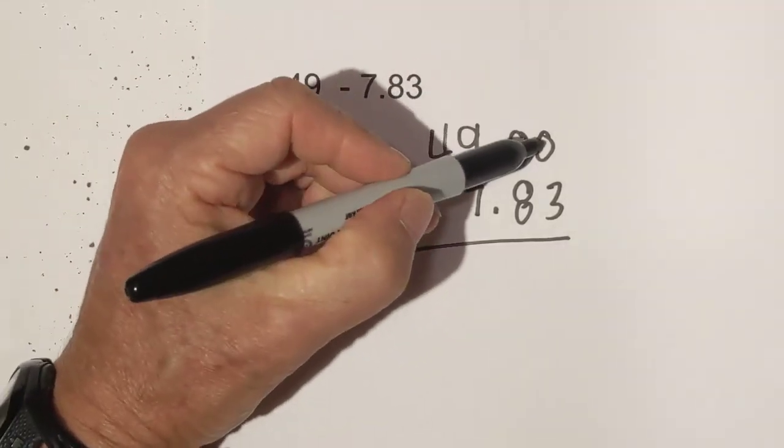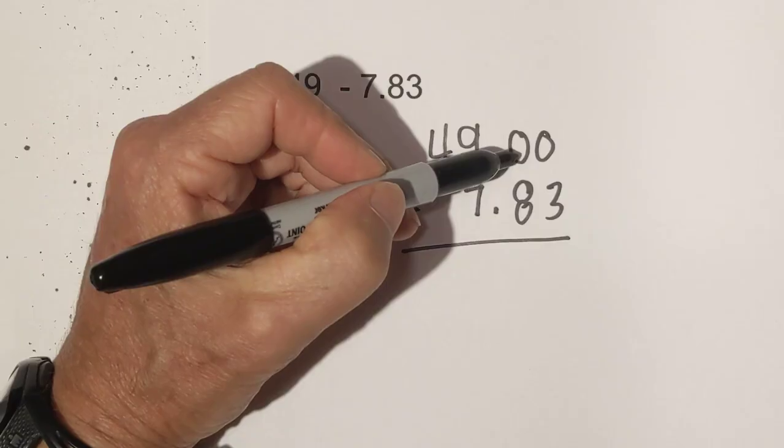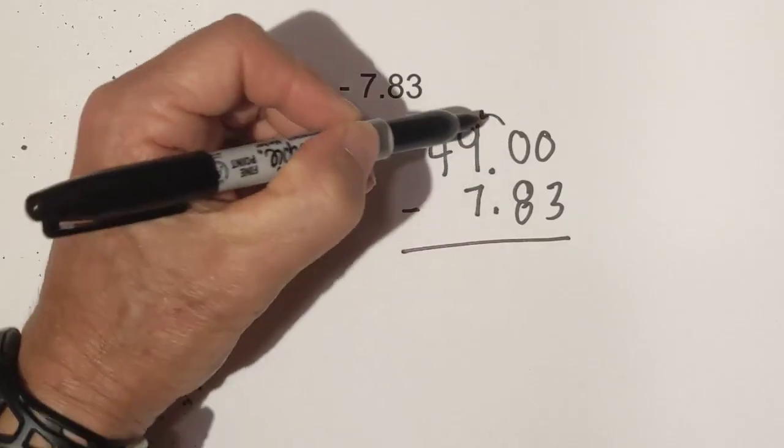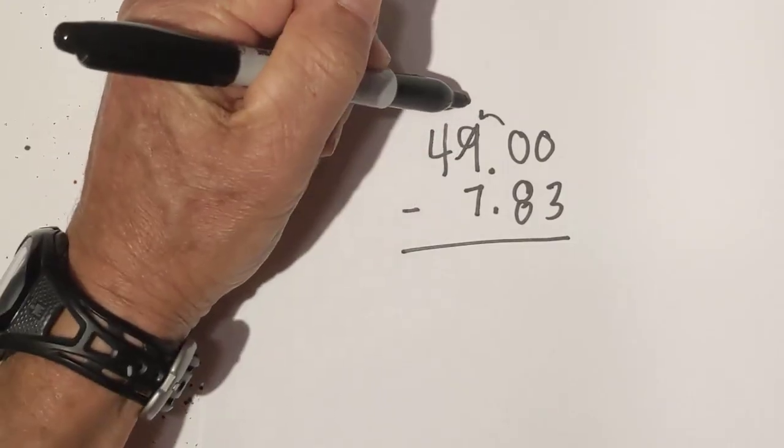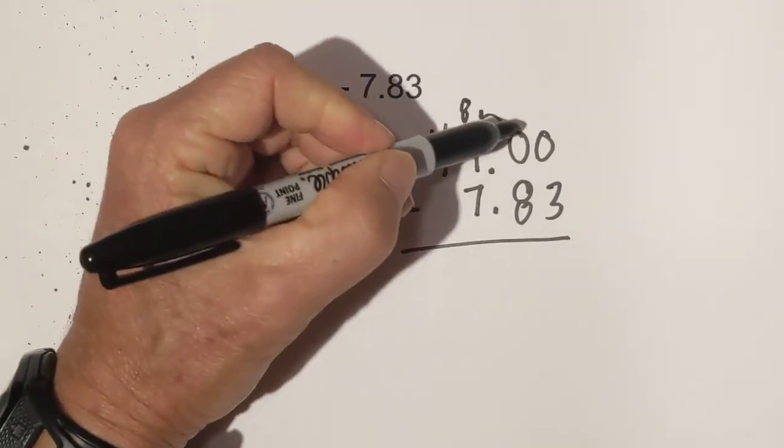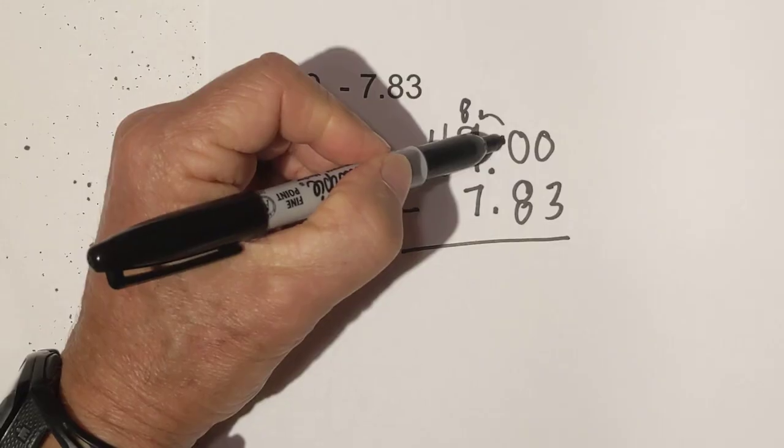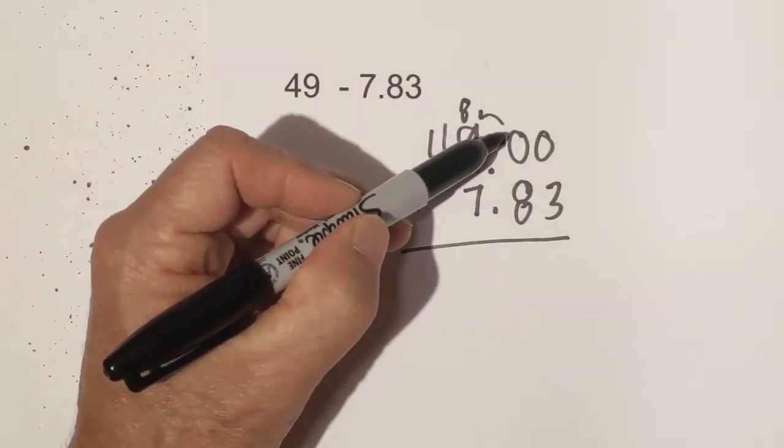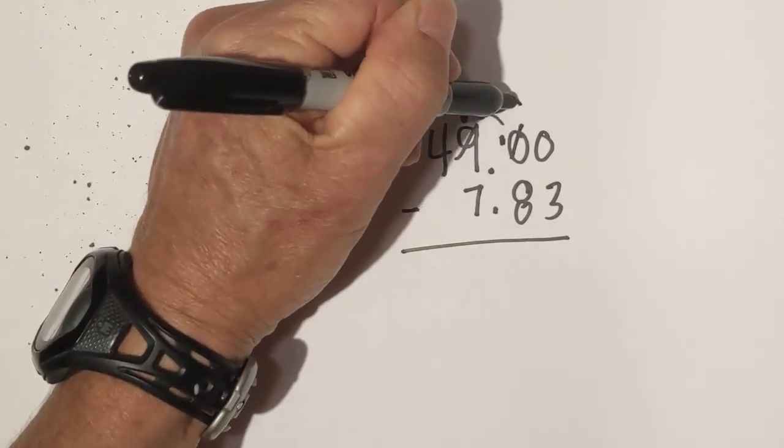Now we have this problem again. Zero is smaller than three, so it needs to borrow ten. But this zero is smaller than eight, so it's got to borrow ten from here. This is going to become an eight and then this will become a ten. Now it's going to borrow ten from this ten, so it's going to become a nine.